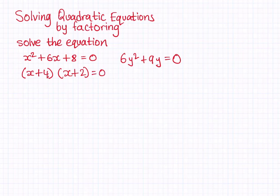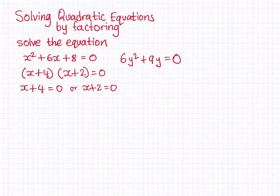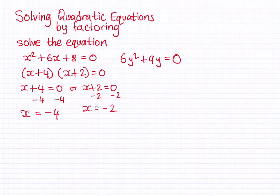Either x plus 4 is equal to 0, or x plus 2 is equal to 0. Let's write down our two equations and solve them. Subtracting 4 from both sides gives x equals minus 4. Subtracting 2 from both sides gives x equals minus 2. So our answers are x equals minus 4 and x equals minus 2.